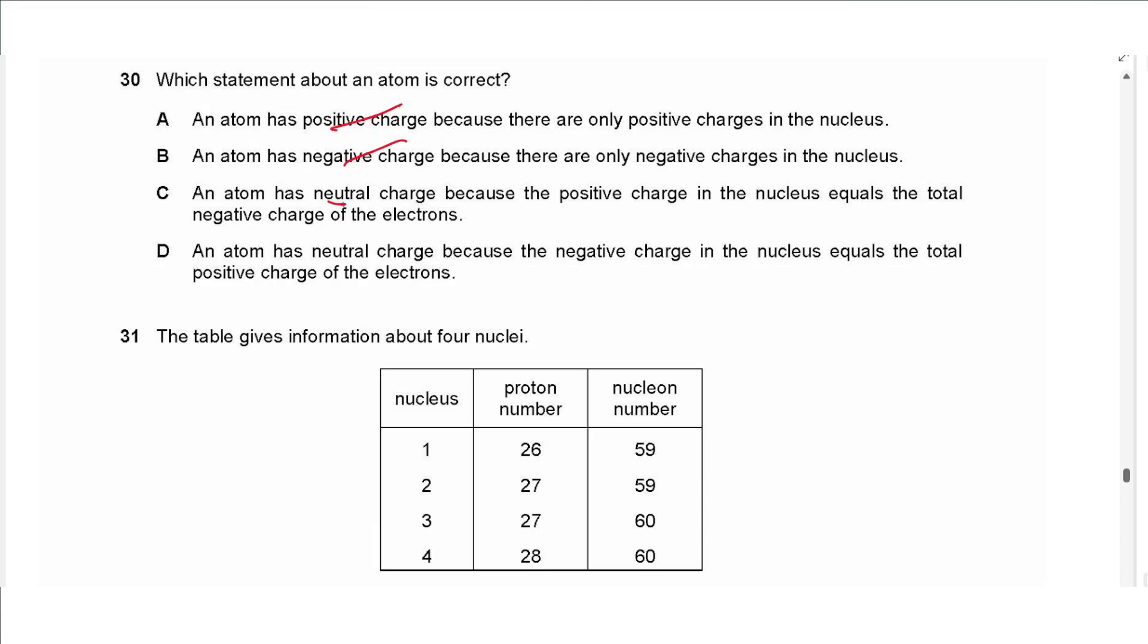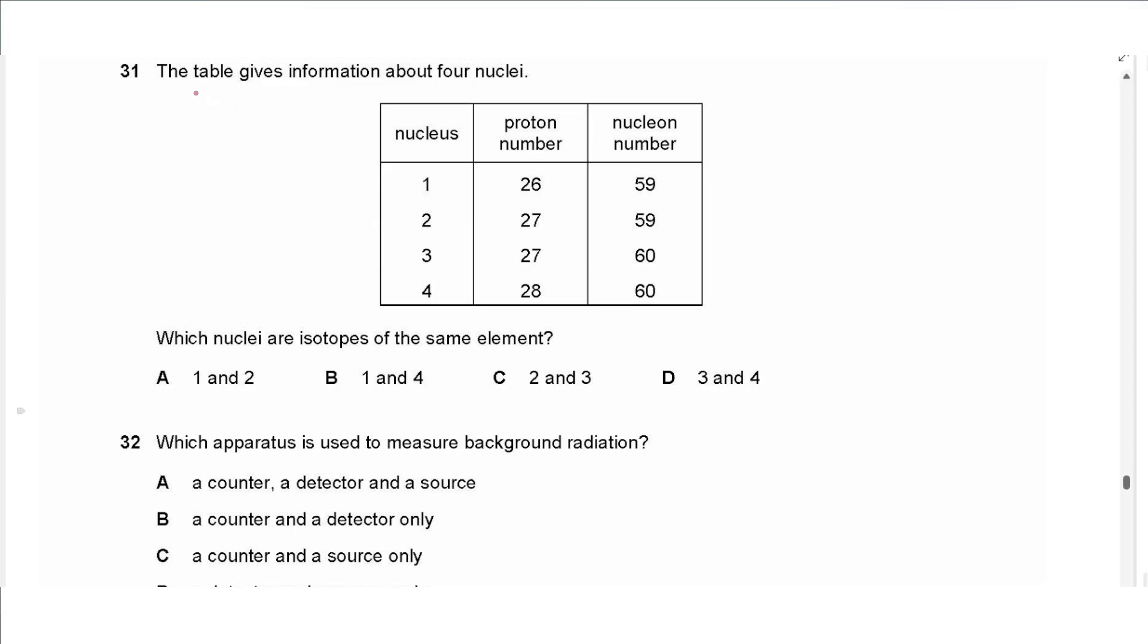Question 30 says which statement about an atom is correct. An atom has positive charge or negative charge, no, it should be neutral. So it's neutral because the positive charge in the nucleus equals the total negative charge of the electrons. Or the negative charge in the nucleus equals the total positive charge of the electrons. Electrons are not positive and are not in the nucleus, so the answer is C, positive charge in the nucleus due to protons and electrons in the orbital shells.